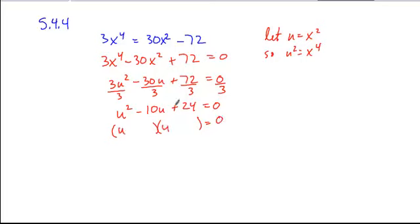I have 2 factors of positive 24 whose sum is negative 10, is negative 6 and negative 4. So u is either going to be positive 6 or u is going to be positive 4, and so now I can substitute those back in.